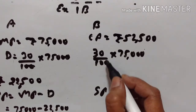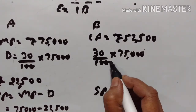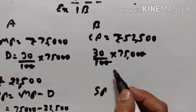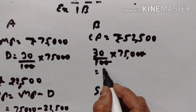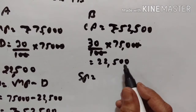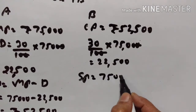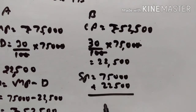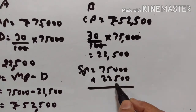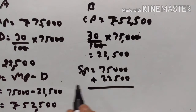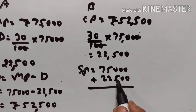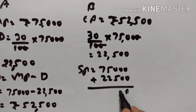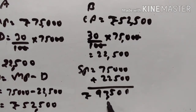B raises the marked price by 30% on his cost price of Rs.52,500. So his selling price is Rs.52,500 plus Rs.22,500 plus Rs.22,500, which equals Rs.97,500. He sells it to dealer C in Delhi.